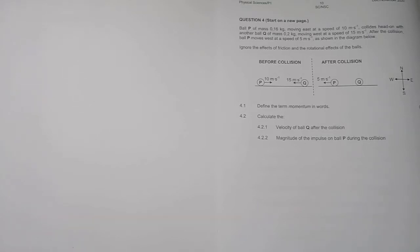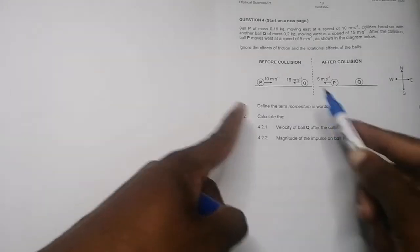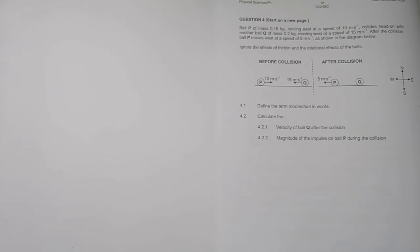Let's begin. Question 4: We've got ball P of mass 0.16 kg that is moving east at a speed of 10 meters per second. It collides head-on with another ball Q of 0.2 kilograms moving west. After the collision, ball P moves to the west. They say ignore the effects of friction and rotational effects of the ball. We're going to look at the principles of conservation of linear momentum here.